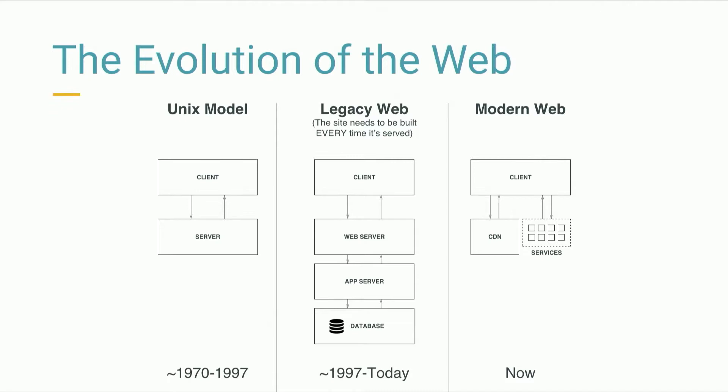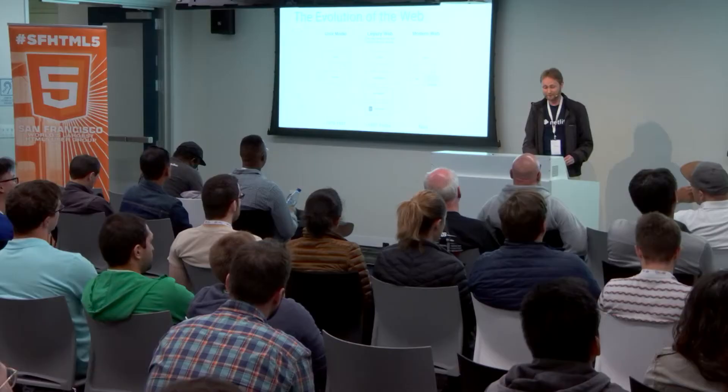Way before the web, we had the traditional client-server model in Unix — very simple. You ran your client on a local workstation, logged into a Unix server over an open connection, and sent information back and forth. Then the web happened and we moved to a different kind of interaction, where the browser was a lightweight document reader talking to a web server, which talked to an application server, which talked to a database.